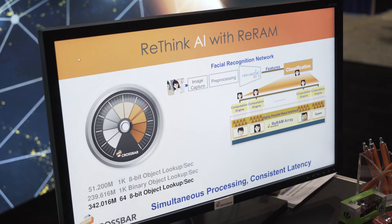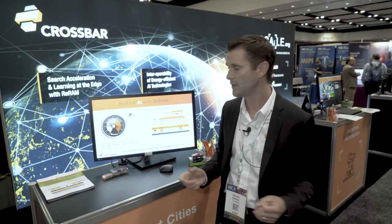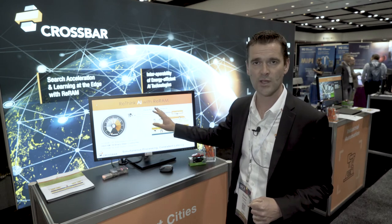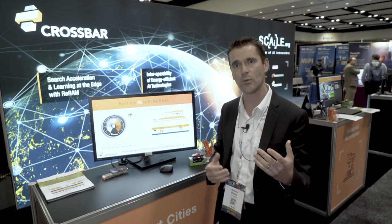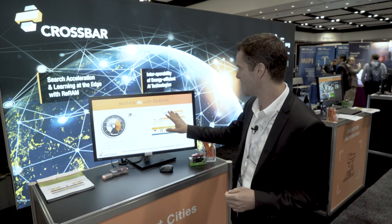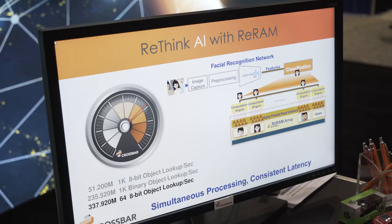In a typical face recognition application, you're taking pictures and after some preprocessing, you run these through a neural network. We are not doing the neural network — we are partnering with neural network hardware accelerators. What we do is take the output of the neural network and compare these outputs with a database. So you can see Crossbar as a database accelerator: how fast you can look up objects from this database against the outcome of the neural network.